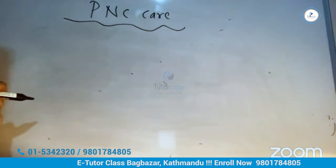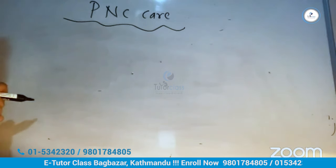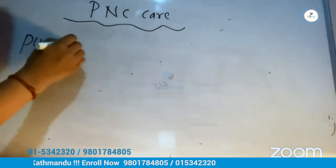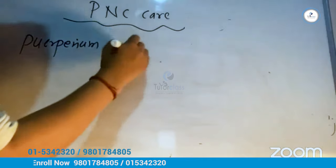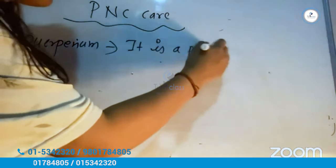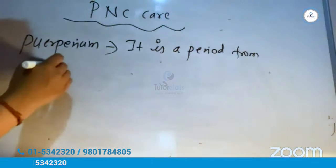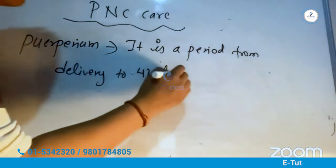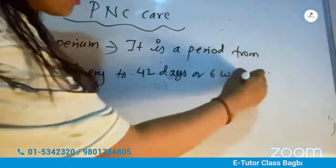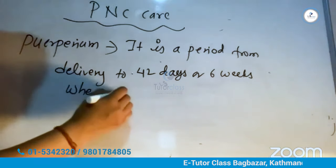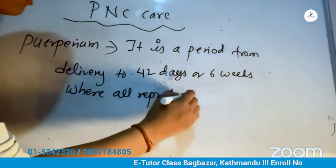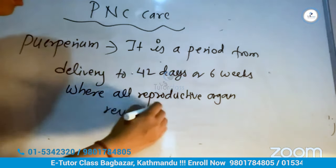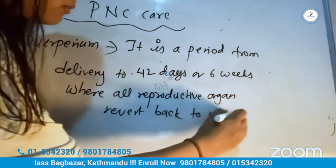Now postnatal care — PNC care. The puerperium is the period from delivery to 42 days, or six weeks, where all reproductive organs return back to non-pregnant state.